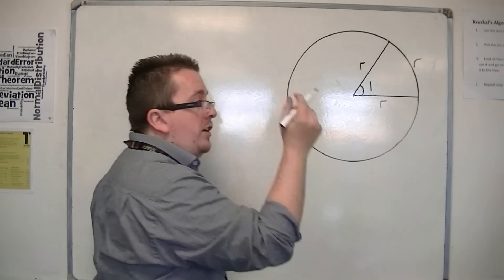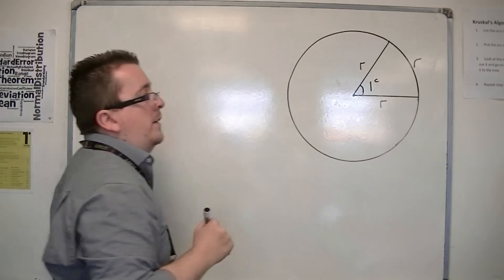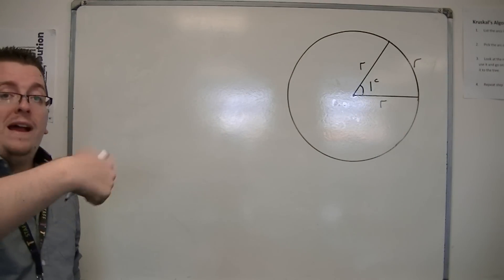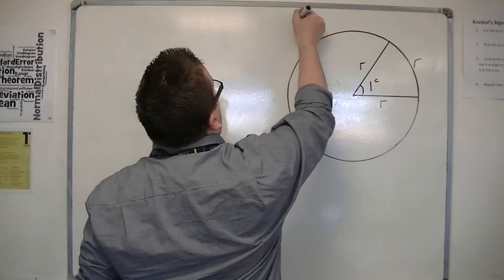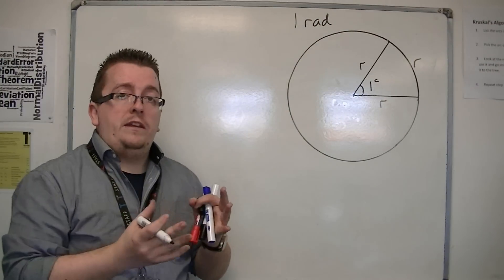And instead of using a degree symbol, a little circle, we use a C. So 1 radian, or 1 rad. You could write it as 1 rad. So that's 1 radian.